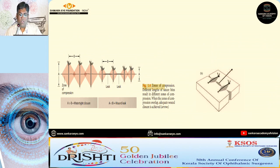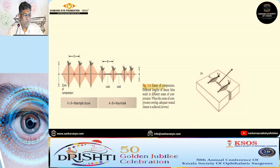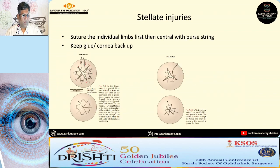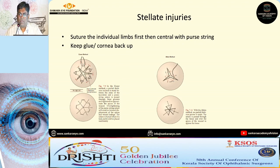It is important to note the zone of compression between the two sutures, so space them such that the zones of compression overlap. For a stellate injury, individual limbs have to be sutured first followed by central purse-string suturing. Sometimes if there is still a defect after purse-string sutures, you might have to apply glue or, rarely, a small piece of corneal tissue.